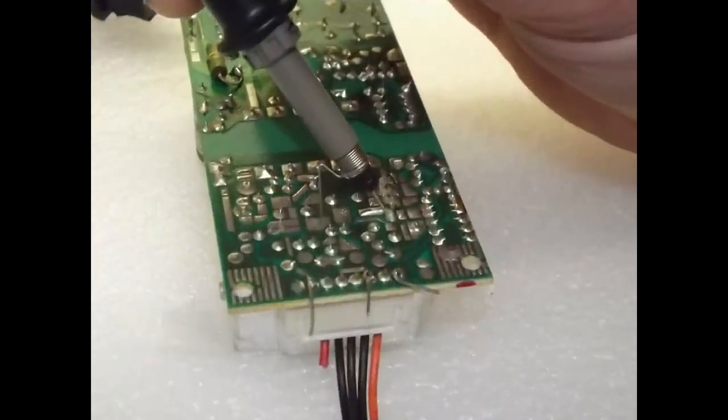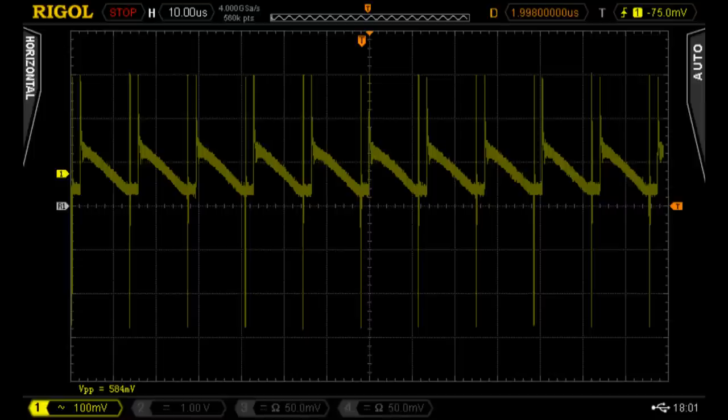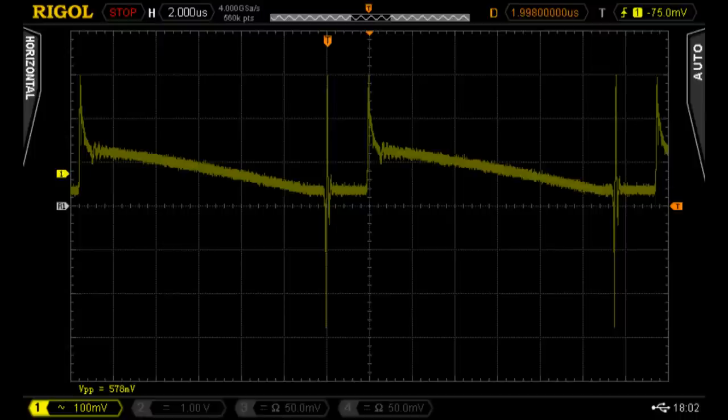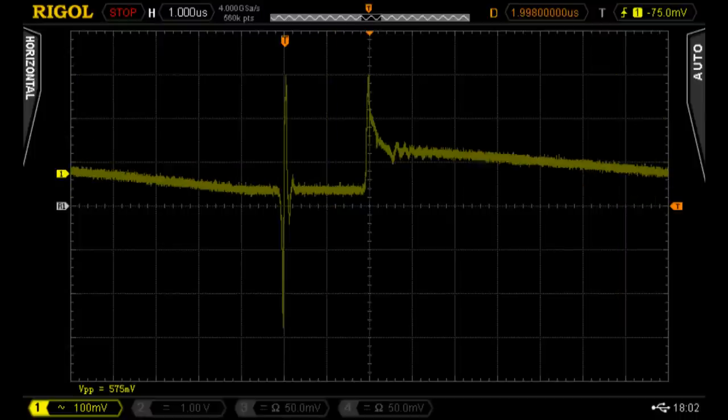Probing further into the unit shows the charge-discharge cycle of the capacitor just after the Schottky rectifier diode on the output side. You can see the fierce charging pulse, then the gradual discharge.